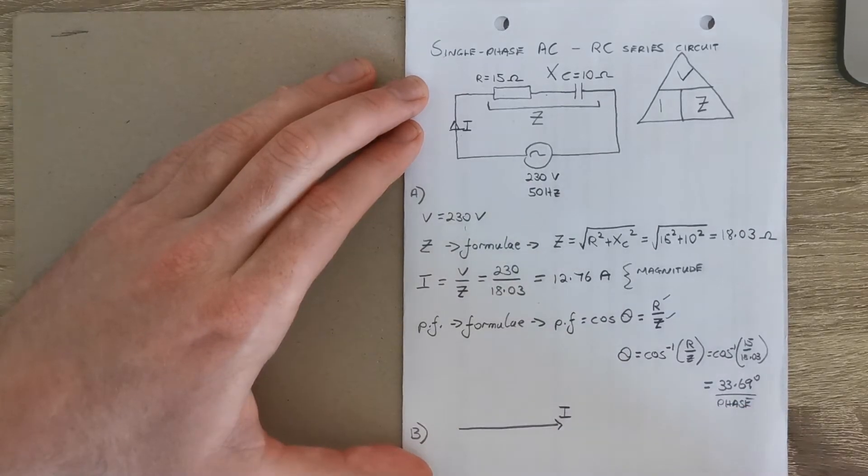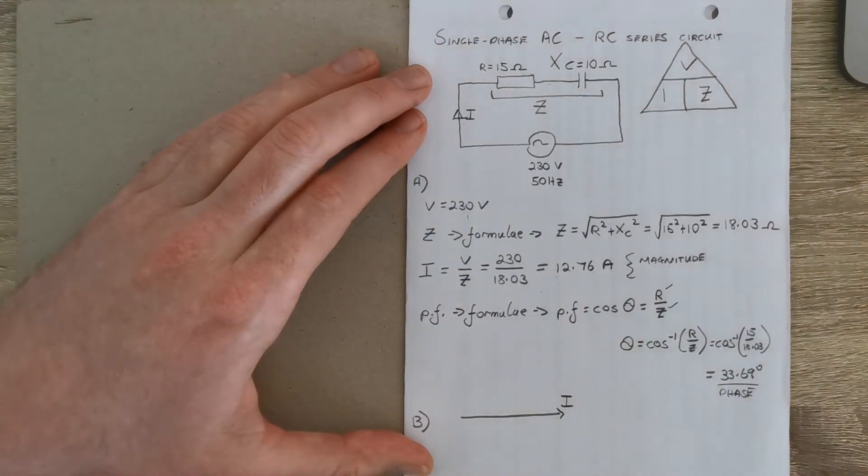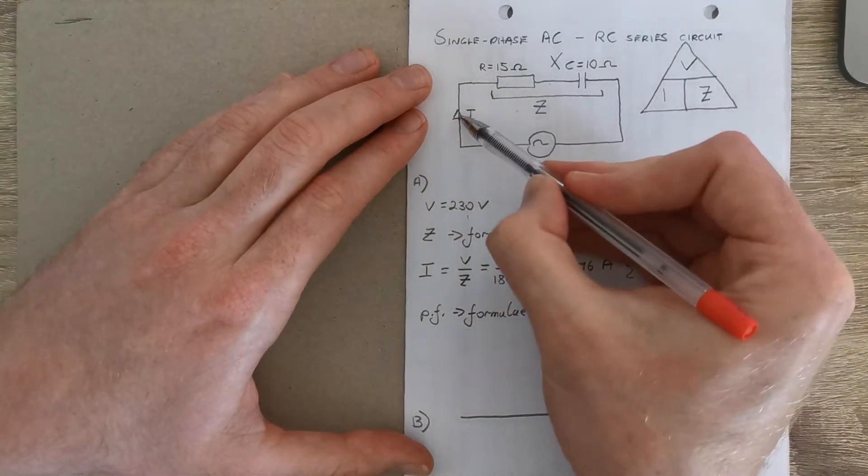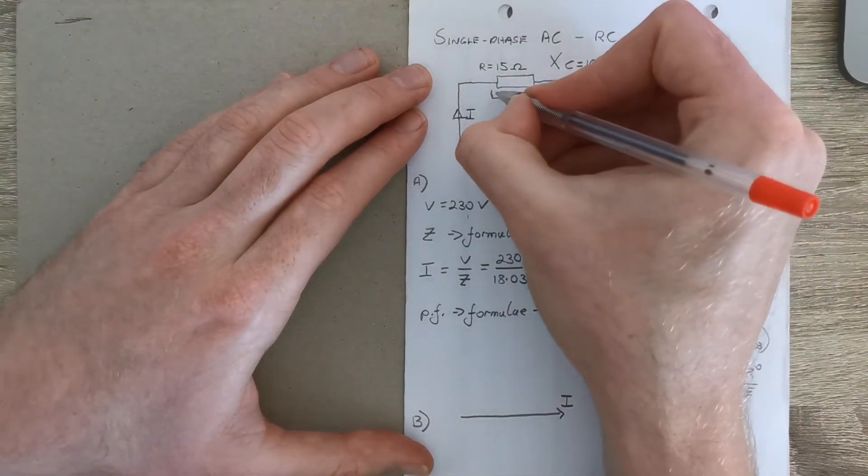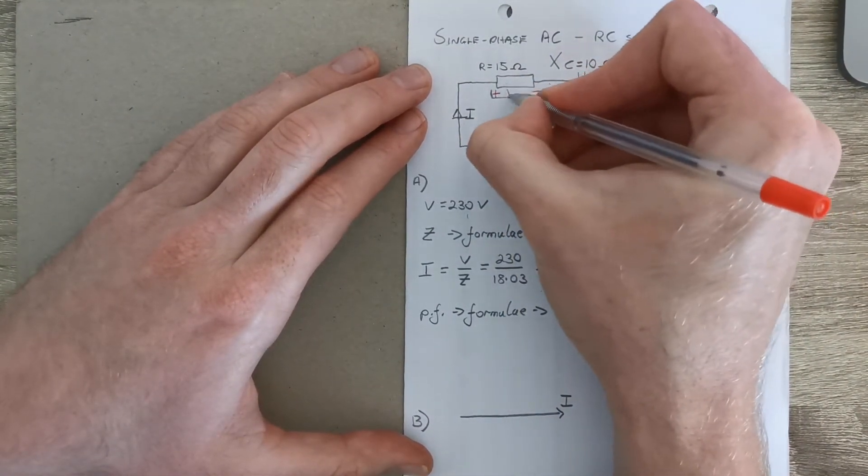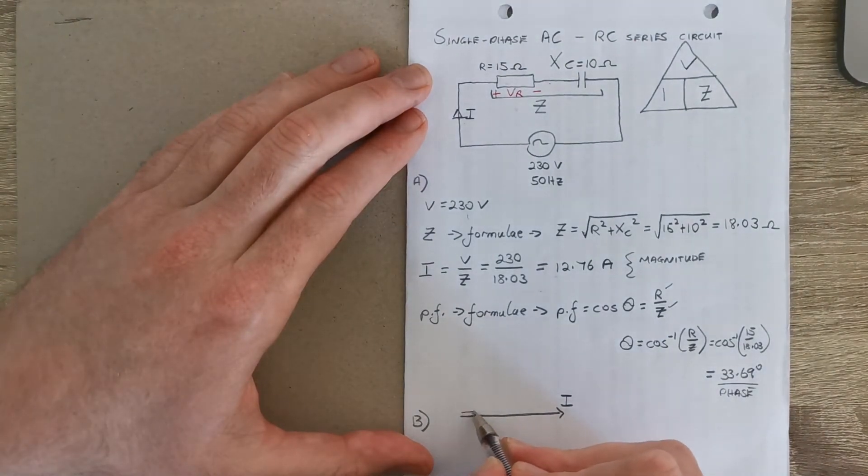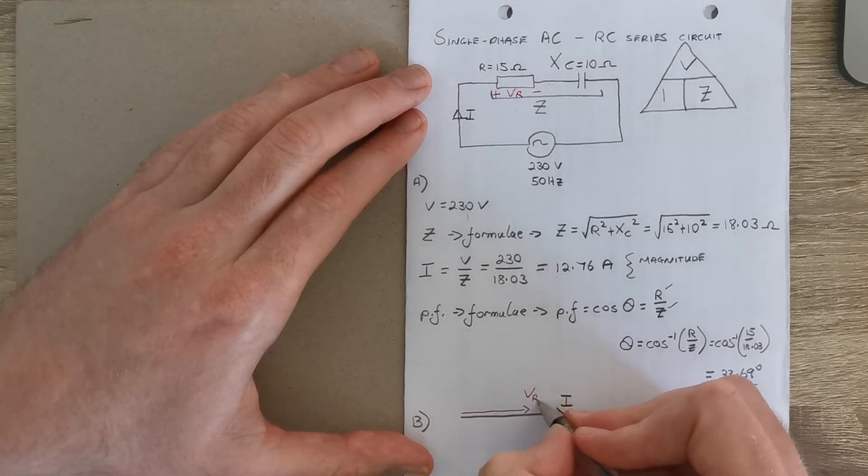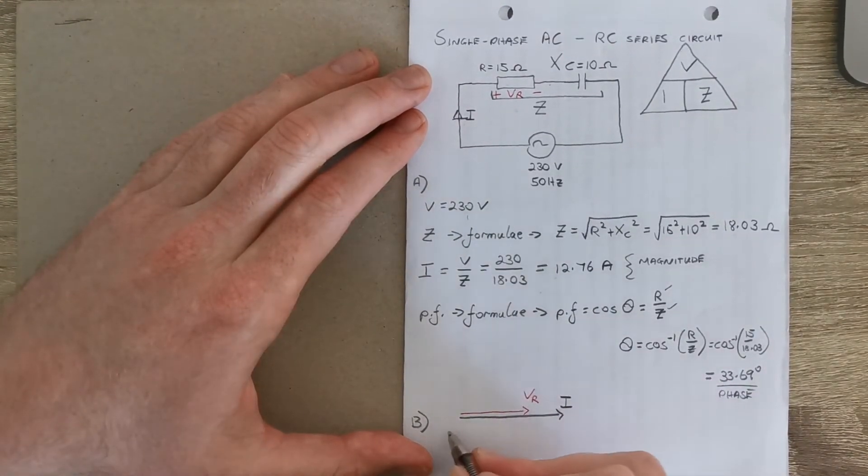I. Now for the current and voltage across the resistor, so the voltage across here VR, they're going to be in phase. Again, this is not to scale, but VR is this phasor here because it's in phase with the current.